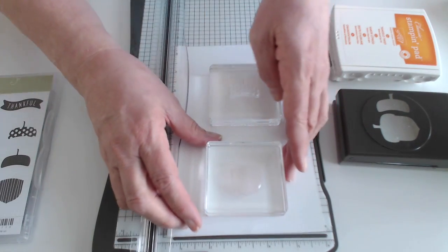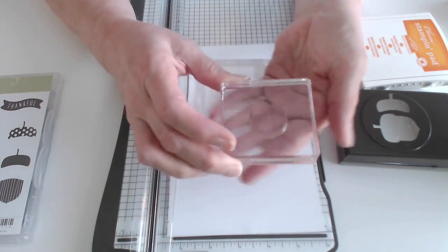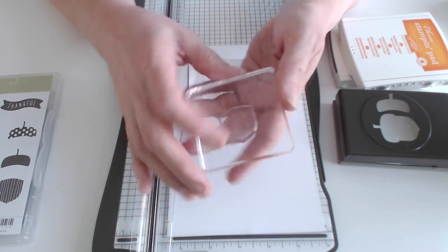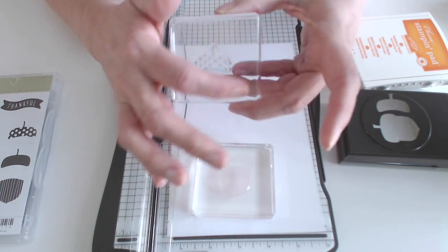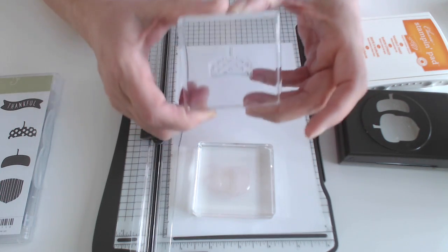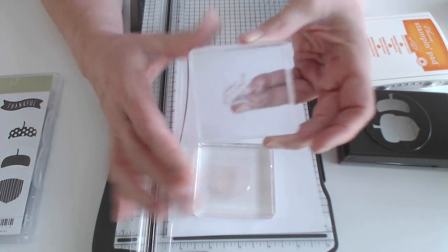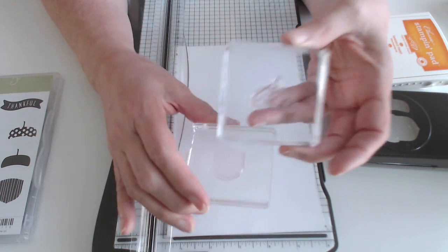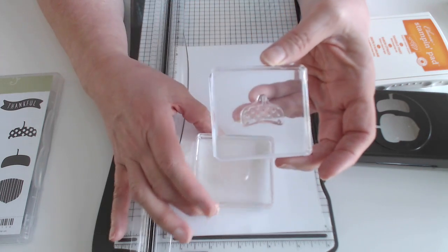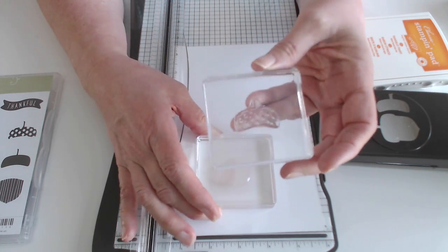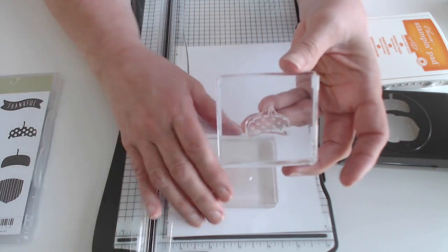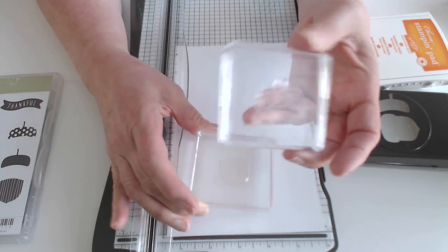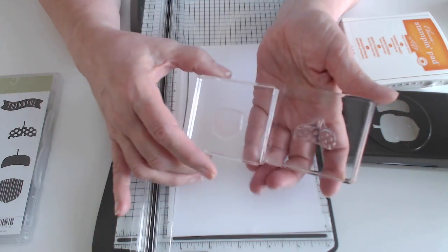One of the things that I like to say is make sure your block is a little bit bigger than your stamp. You don't want your stamp hanging off the edge. It will not come out clean, it will not come out clear, and you'll probably be missing half of your ink. So always use a little bit bigger block than your stamp.